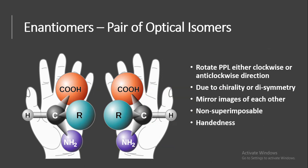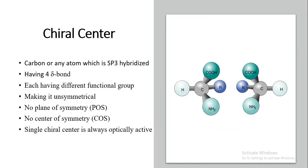Enantiomers are pairs of optical isomers that rotate plane polarized light either clockwise or anticlockwise. This is due to chirality or disymmetry — the compounds are unsymmetrical. Enantiomers are mirror images of each other, non-superimposable, and show two handedness. A chiral center is a carbon or any sp3-hybridized atom having four sigma bonds, each with a different functional group attached — making it unsymmetrical with no plane or center of symmetry. Therefore, a compound with a single chiral center will always be optically active.